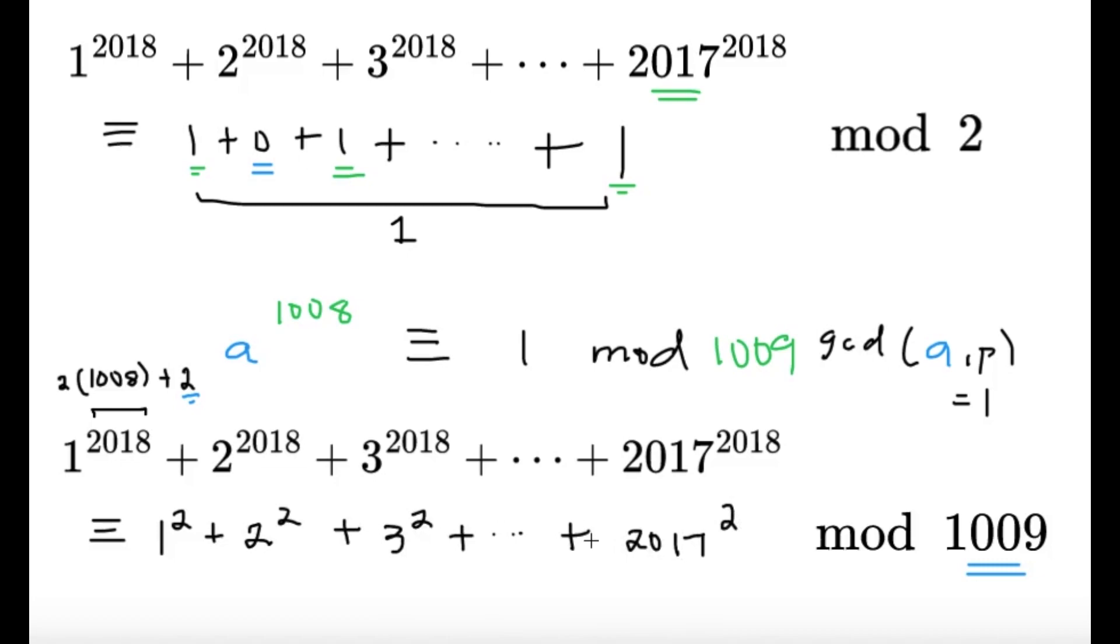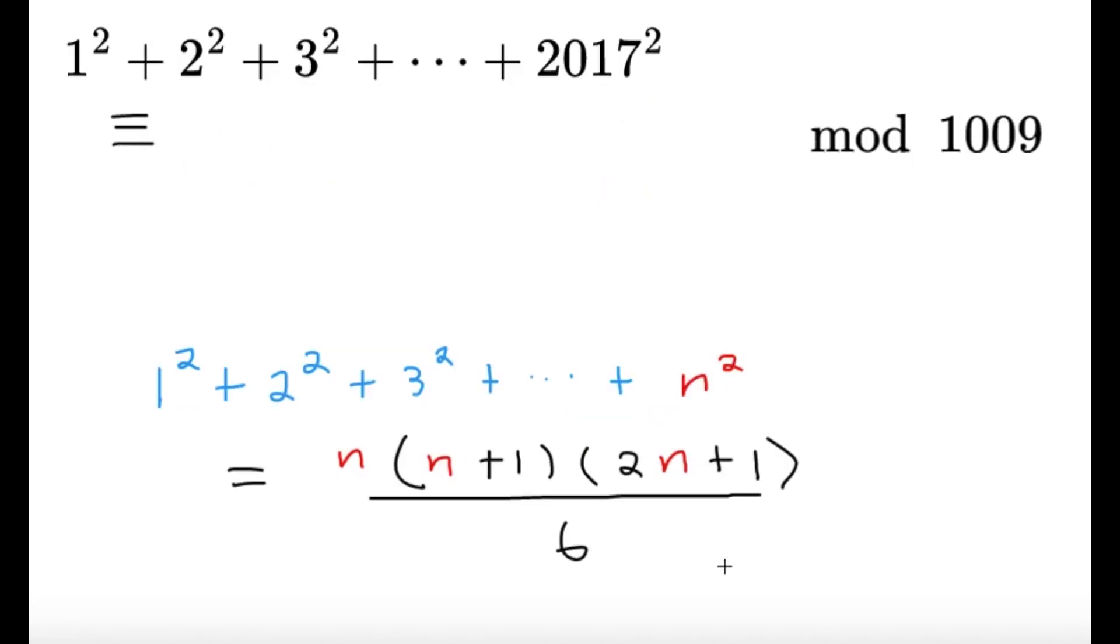You might be wondering, how about the 1009 raised to 2018? Yes, it is indeed true that we cannot apply Fermat's little theorem if a here is 1009. But then again, 1009 raised to 2018 is 0 modulo 1009. I can simply replace this with 1009 raised to 2, and it's still 0 modulo 1009. So it's not going to change the sum. I'm just going to write 1009 raised to 2018 in terms of 1009 squared so I can maintain this pattern. And having this pattern is nice, because I'll be able to implement it here, because we have the formula for the sum of squares.